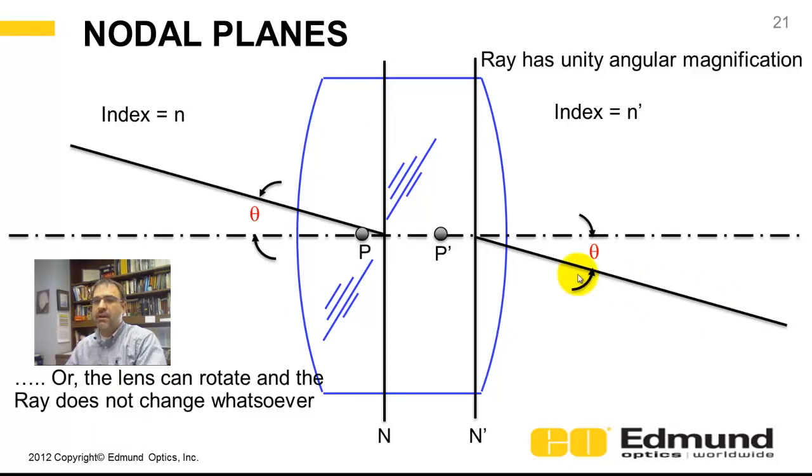And it's not going to deviate. The output angle is going to equal the input angle for all cases here. Or we could rotate this lens to our heart's content, and this ray will remain undeviated.